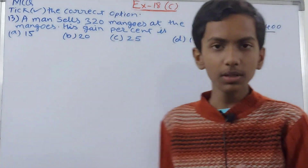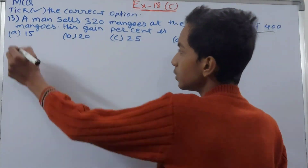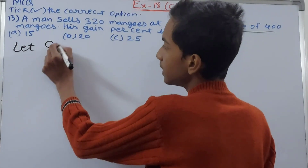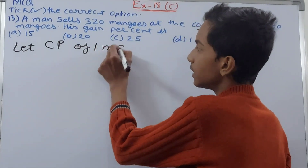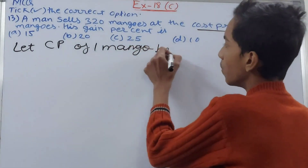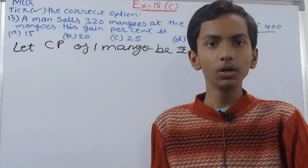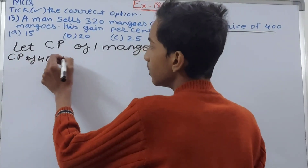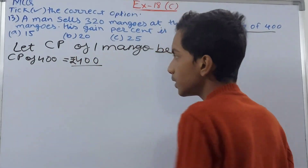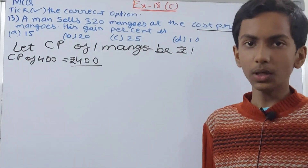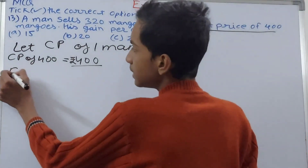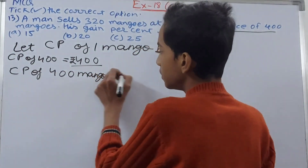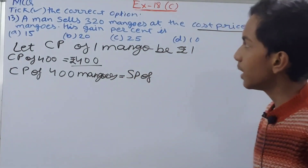Let the cost price (CP) of one mango be ₹1. So the CP of 400 mangoes becomes ₹400. Now according to the question, the CP of 400 mangoes equals the selling price (SP) of 320 mangoes.